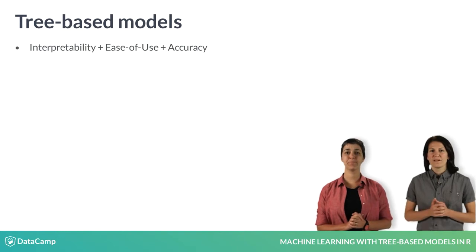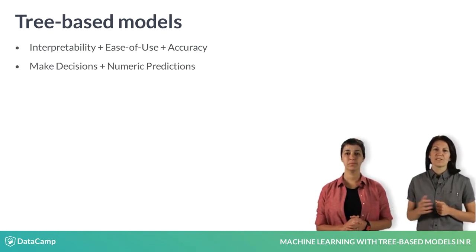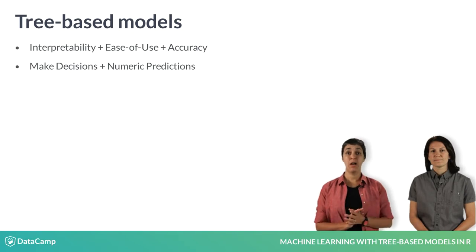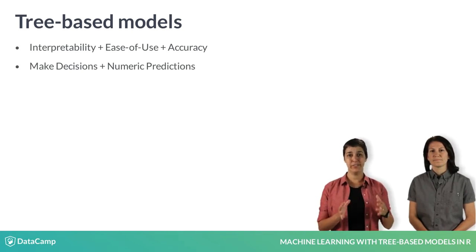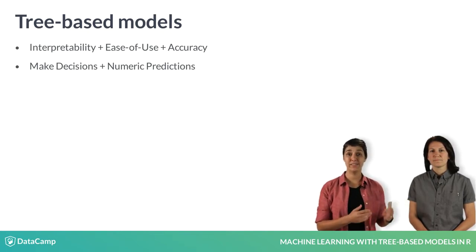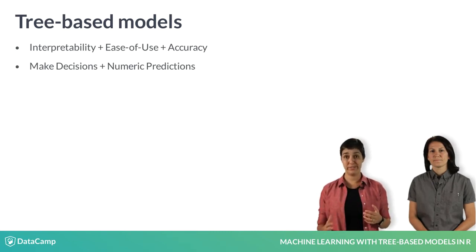Tree-based methods are simple and useful for model interpretation. They're used to make decisions, explore data, and make predictions. Decision trees are naturally easy to interpret — anyone comfortable reading a flowchart already has the skill set to understand a decision tree. Trees are used not only by data scientists, but also by managers and decision makers, for example, to help them make decisions.